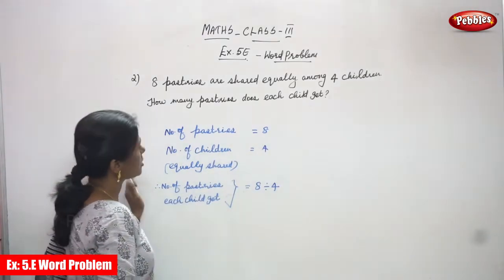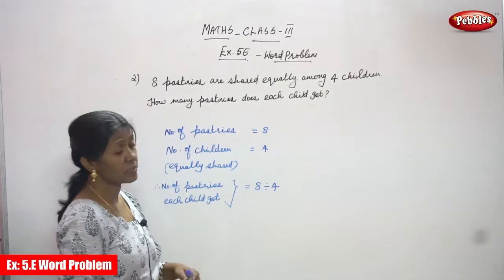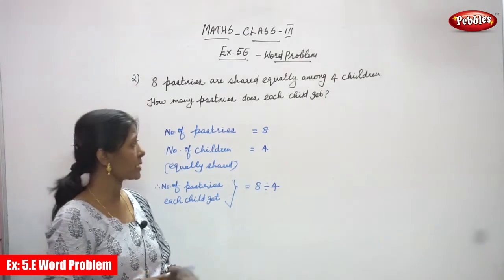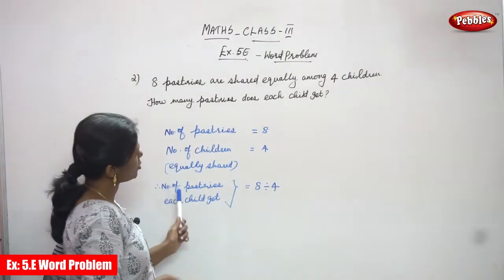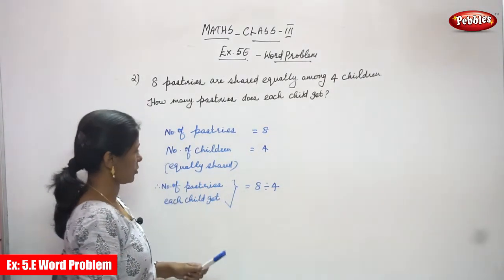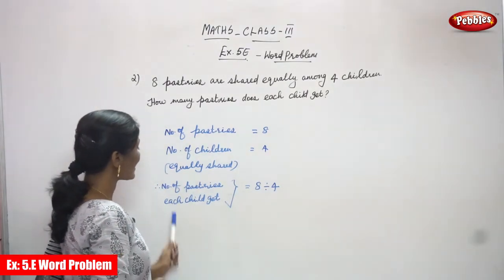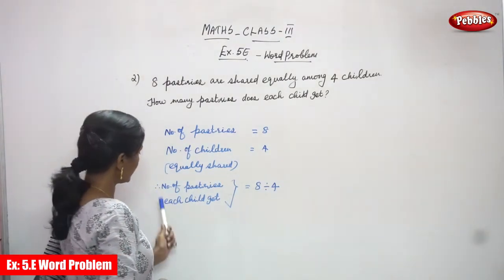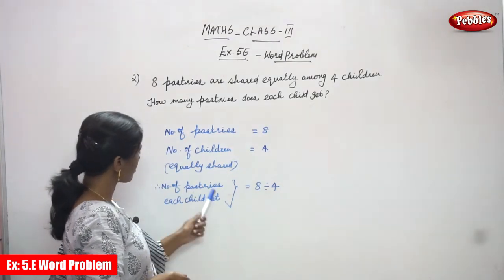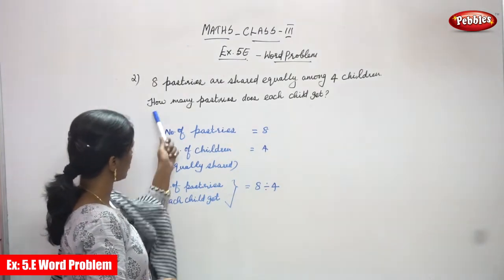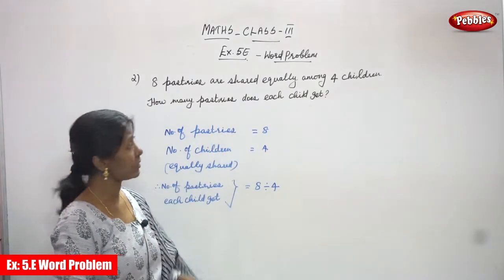This is the question. This is also division. The total number of pastries is 8, and the number of children equally shared is 4. We are going to find the number of pastries each child gets. How many pastries does each child get?